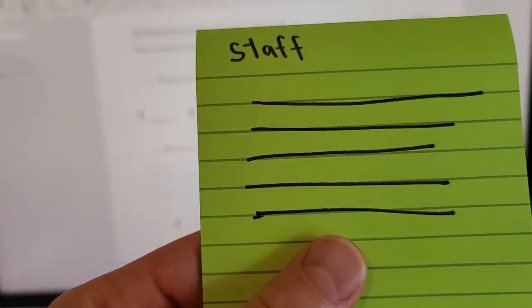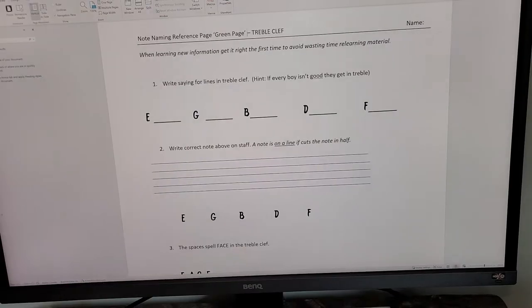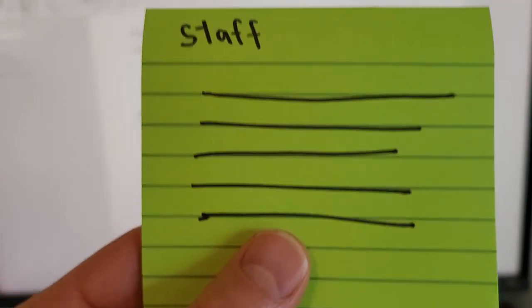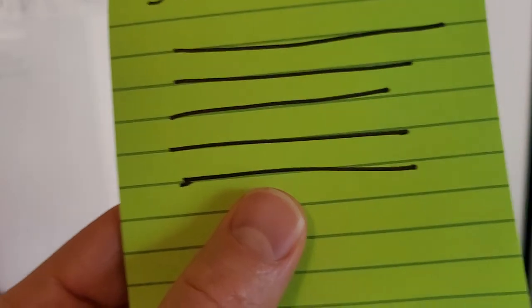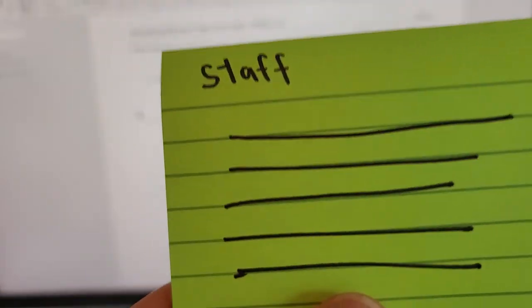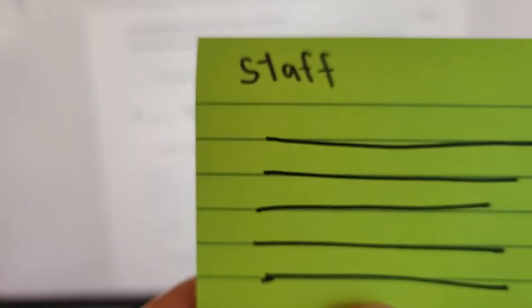This is called a staff. Now, this staff could be many different things at this point. It could be for rhythm, it could be for the treble clef, it could be for the bass clef, it could be for the alto clef. Today we're going to start with the treble clef.